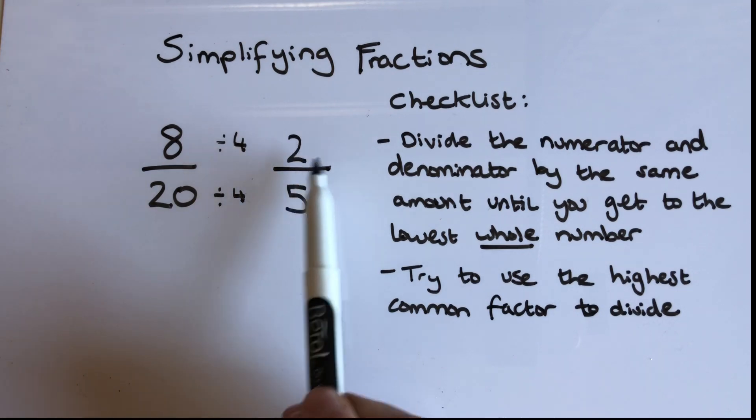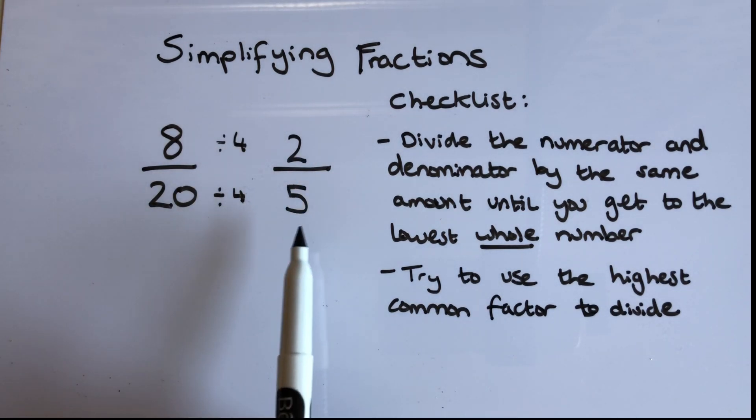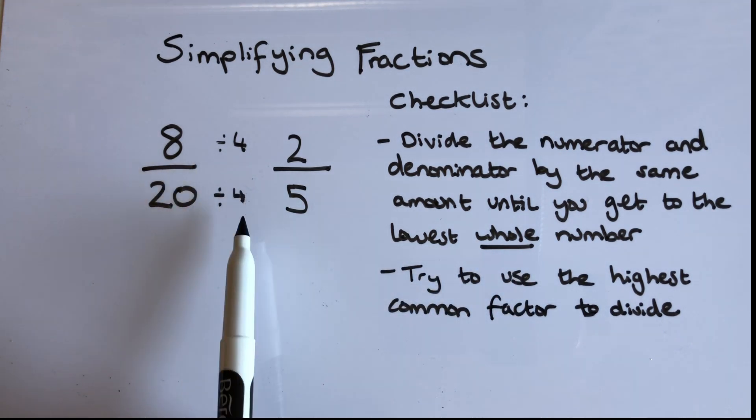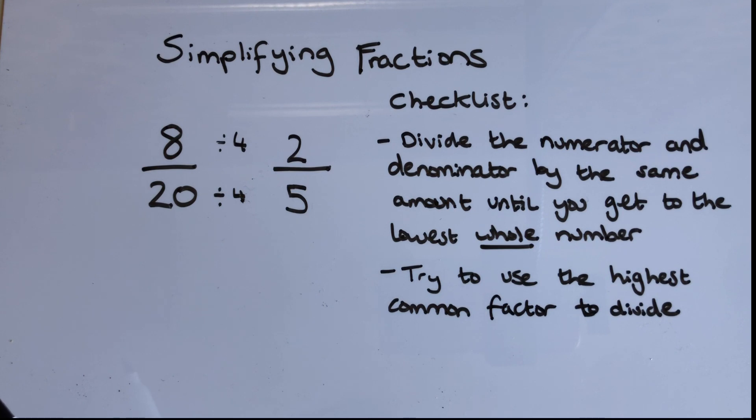I cannot divide 2 anymore by the same number that I could divide 5, so I have reached the lowest whole number and I used the highest common factor that I could think of.